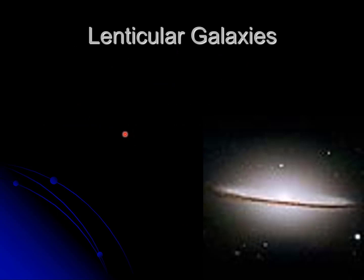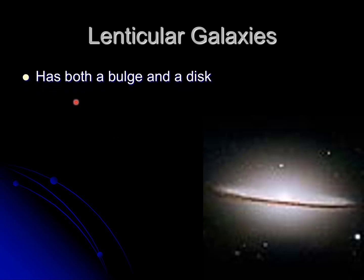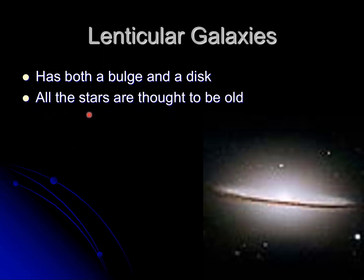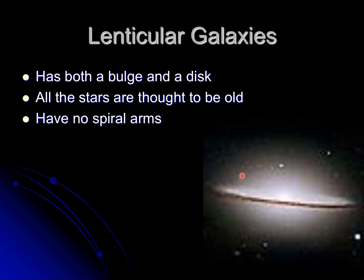Lenticular galaxies are another type of galaxy. They have both a bulge and a disc. All the stars in lenticular galaxies are thought to be old. They have no spiral arms, and there is little or no gas present, as you can visualize here.